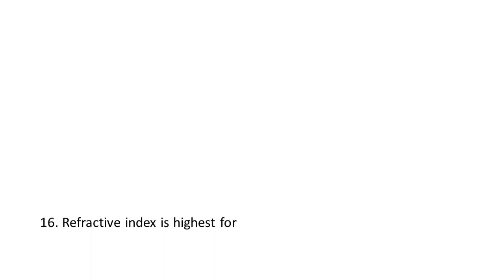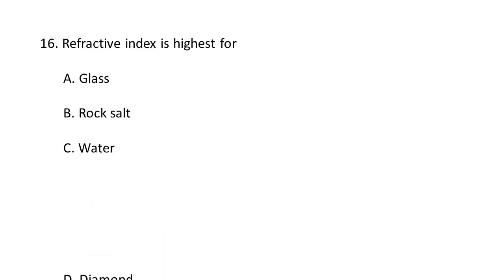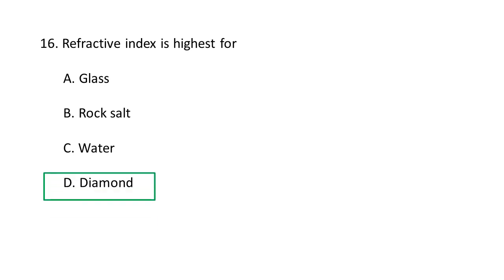Next question: Refractive index is highest for — A. glass, B. rock salt, C. water, D. diamond. Refractive index is highest for diamond. Diamond has a refractive index of around 2.42, whereas glass has a refractive index of about 1.5, water is 1.33, and air is 1.0003. D is the correct option.